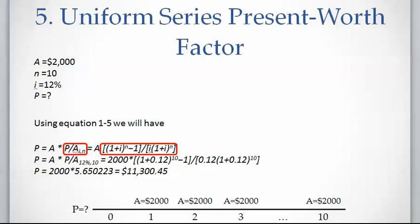Using the factor notation, P equals A multiplied by the factor where i is 12 percent and n is 10. So if you save two thousand dollars per year at the end of each year for 10 years starting from year one to year ten, the accumulated money is equivalent to eleven thousand three hundred dollars at present time.